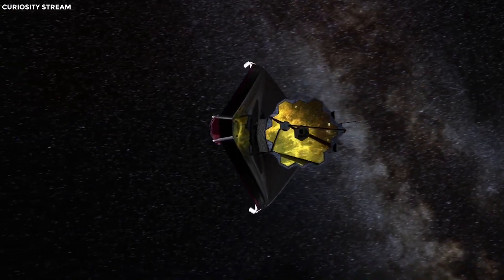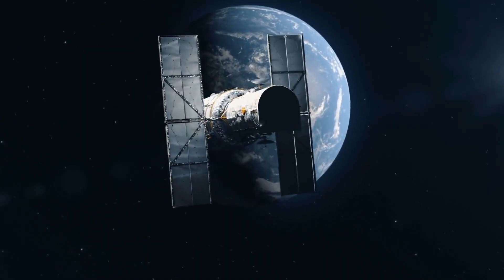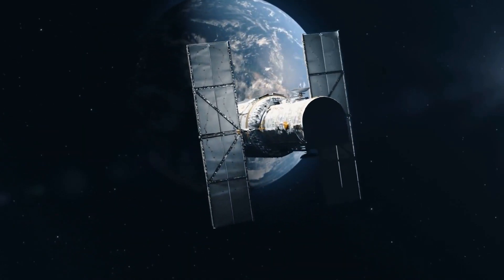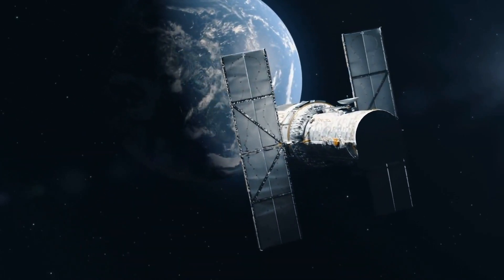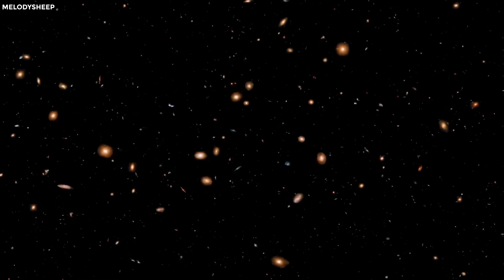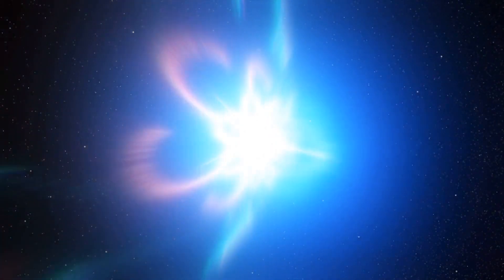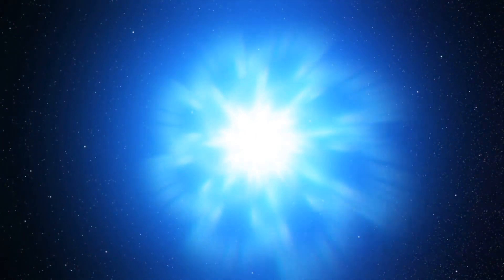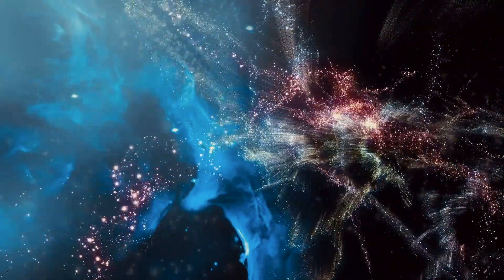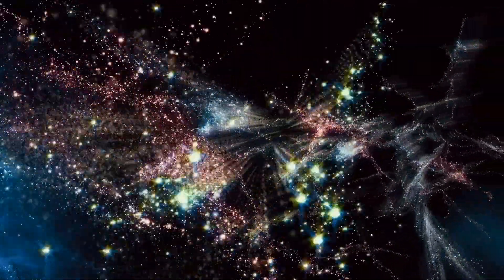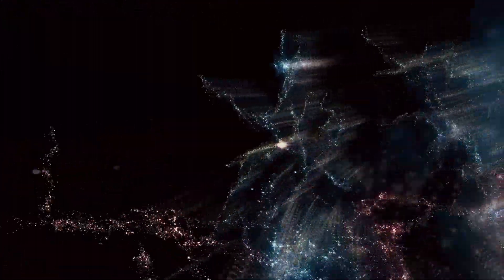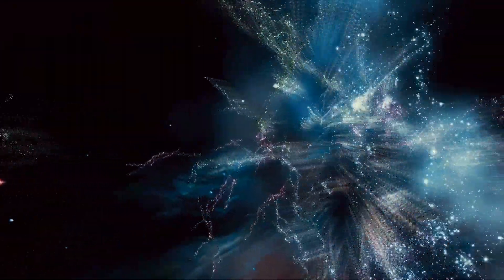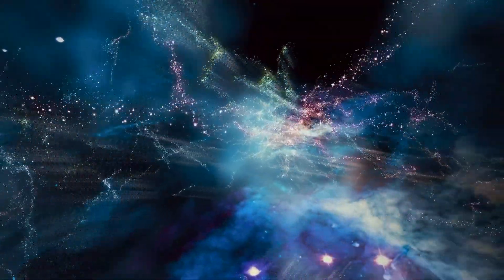On the other hand, the observable universe refers to the region of space that we can actually observe from Earth or space-based telescopes and probes. The observable universe is determined by the distance light has traveled since the beginning of the universe. It includes all matter that we can detect, such as stars, galaxies, and celestial objects. It forms a spherical region centered on the observer.